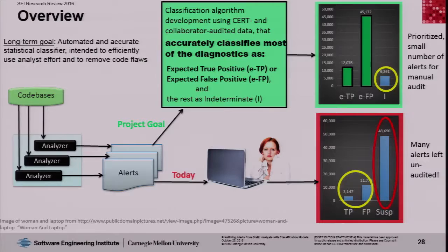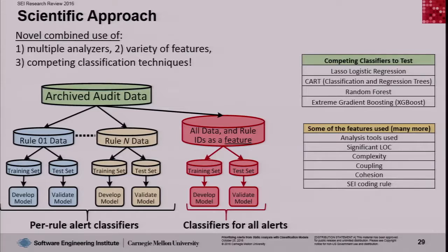As you can see in that green rimmed chart, the green bars are the automatically classified true and false positives. Ideally, we'd like to get a prioritized small number of alerts for manual audit. Our approach uses a novel combined use of multiple analyzers, a variety of features, and competing classification techniques.